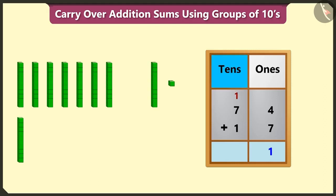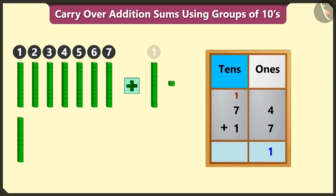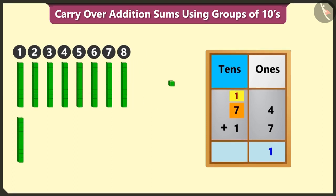Now we have to add the numbers in the tens box to the carryover number. Adding 7 to the carryover number 1 will equal 8, and adding 1 to 8 will equal 9.